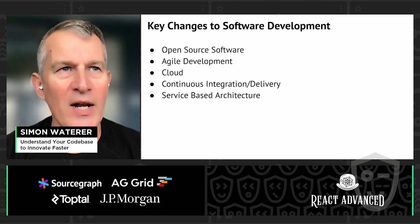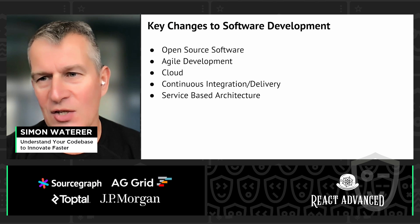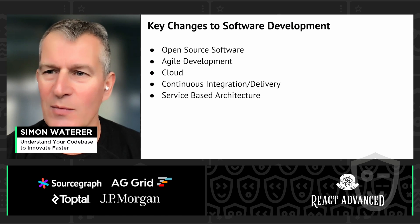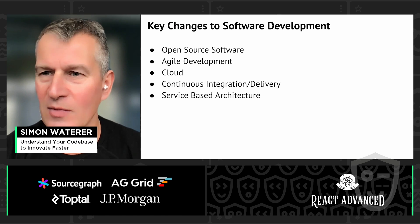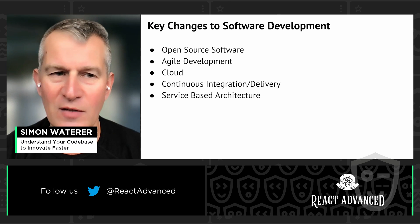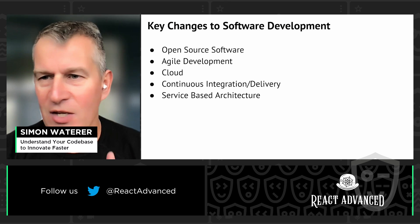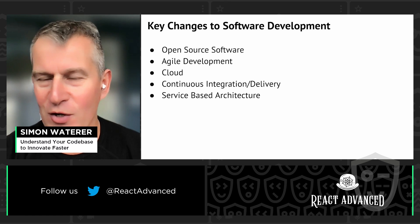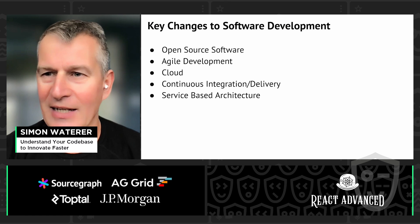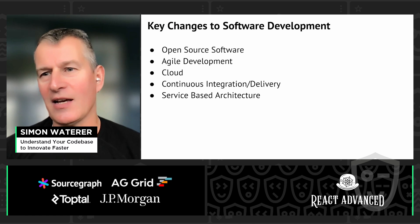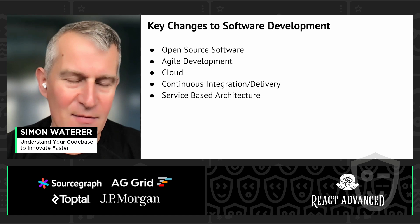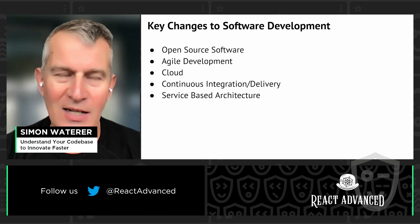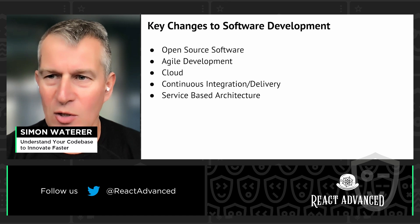First, open source software. When I started in software development, the APIs and libraries you had available were essentially the ones that shipped with the operating system or came with a development tool or platform you'd invested in. Now we have libraries for front end — we're at a React conference, of course — to back end, providing databases, search tools, many many libraries. The challenge is deciding which library or framework you wish to use.